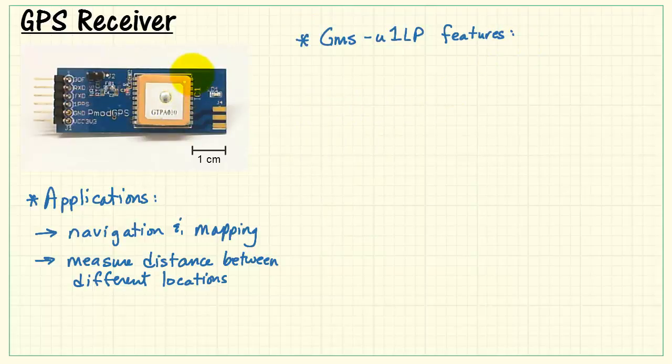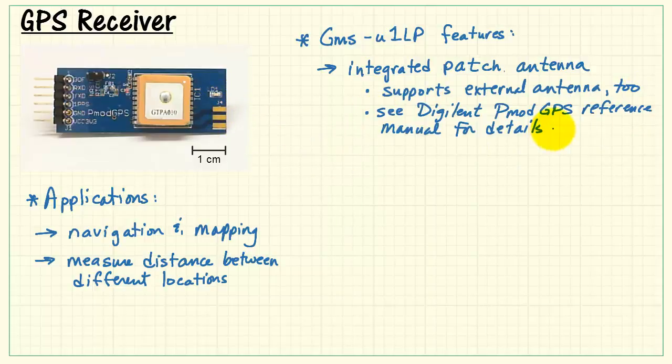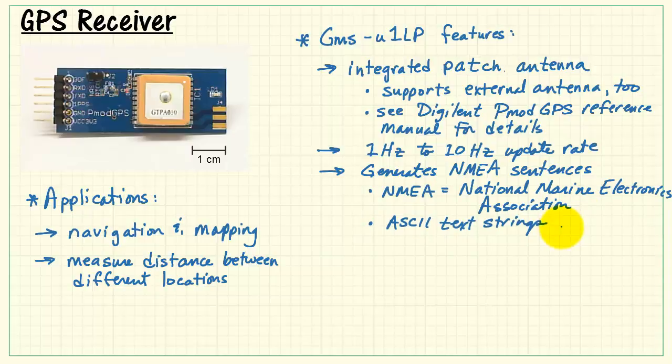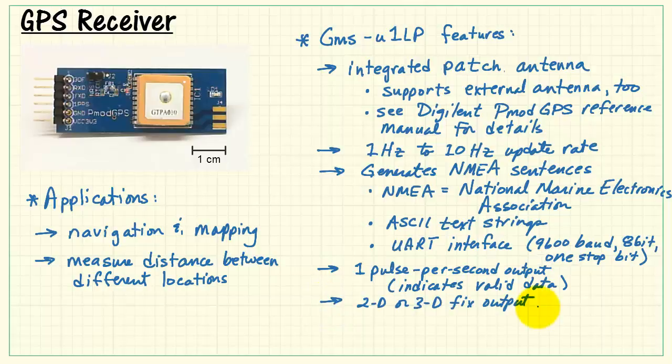Taking a look at the Global Top product features. Again, that's the device right there. It has an integrated patch antenna, and it also supports an external antenna that would be connected right here on the PMOD GPS board. Please see the reference manual for the PMOD GPS for details. You can get 1 Hz to 10 Hz update rates, and it generates NMEA sentences. That's an abbreviation for National Marine Electronics Association. These are ASCII text strings, and it works through a UART interface at 9600 baud, 8 bits, and 1 stop bit.